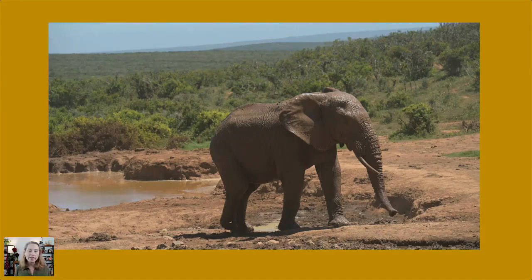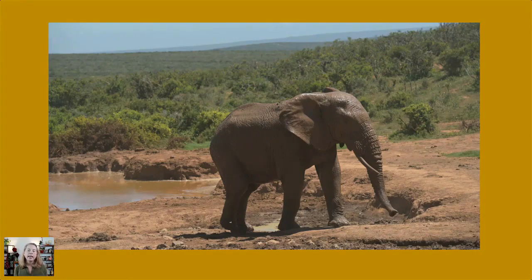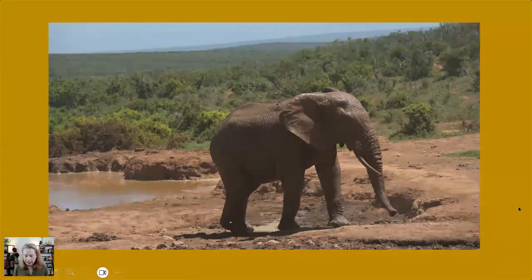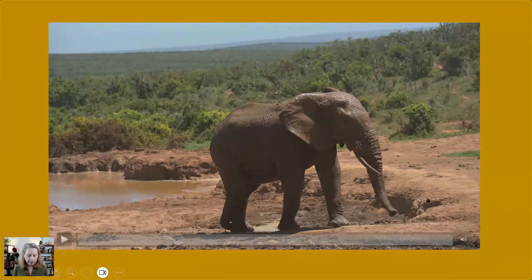Watching animals in the field — whether live in Africa or Asia, or just from a YouTube channel — is a really great way to notice the anatomy we've been talking about and understand their behavior and how that anatomy moves. An elephant is going to move in a very different way than a giraffe or a zebra because of their anatomy, proportions, and muscles. Let's watch a couple of these and then we're going to start drawing.